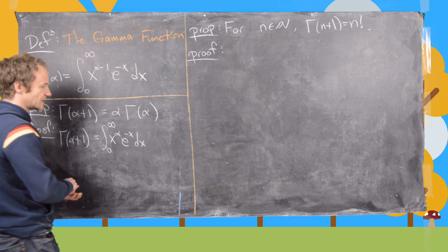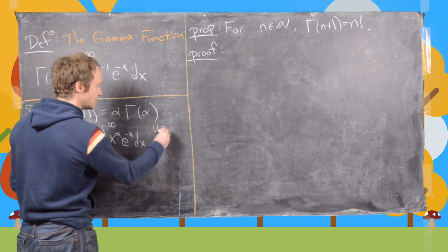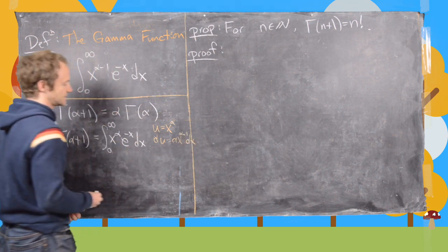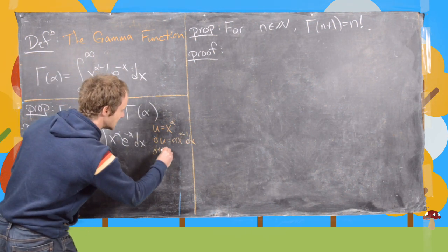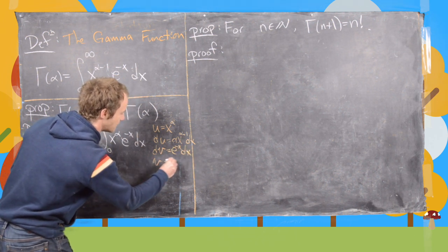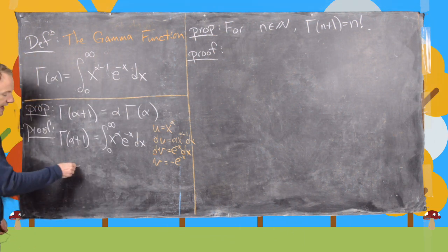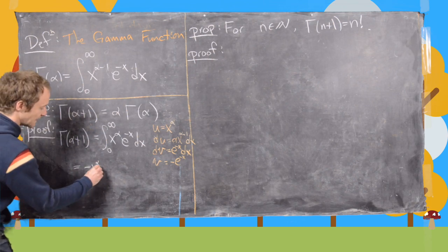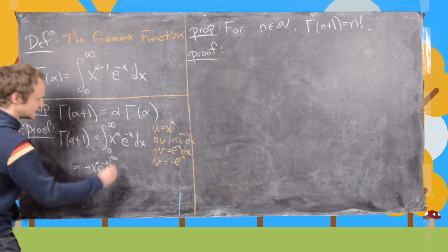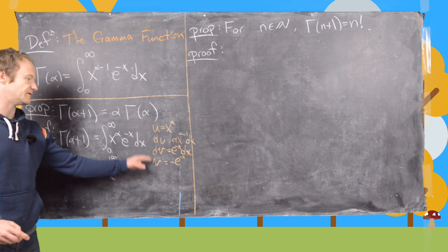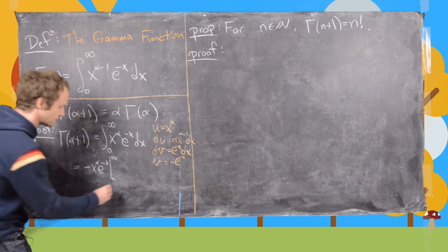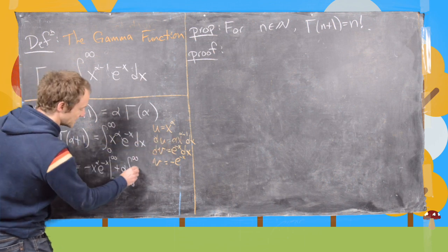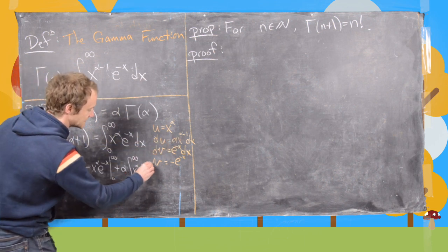We use integration by parts. Let u equal x to the alpha, which makes du equal alpha x to the alpha minus 1 dx. Then let dv equal e to the minus x dx, which makes v equal minus e to the minus x. So we get u times v — which is minus x to the alpha e to the minus x evaluated from 0 to infinity — minus the integral of v du, giving us plus alpha times the integral from 0 to infinity of x to the alpha minus 1 e to the minus x dx.